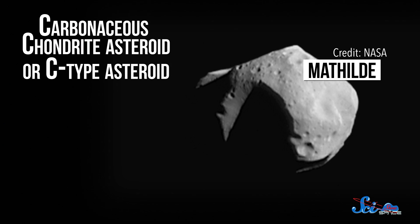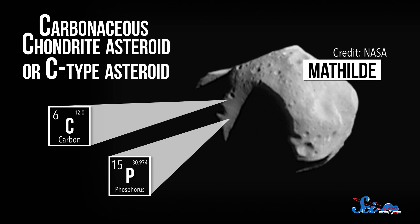Right now, we're most interested in carbonaceous chondrite asteroids, or C-type asteroids. They're mostly made of life-friendly stuff like carbon, phosphorus, and nitrogen.